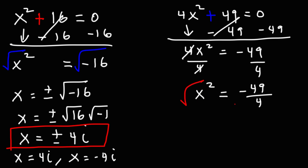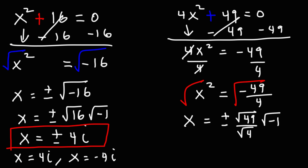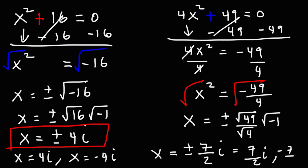Now, let's take the square root of both sides. We're going to have x on the left, and then plus or minus. We can rewrite this square root as the square root of 49 divided by the square root of 4, times the square root of negative 1 — I just broke it up into three parts. The square root of 49 is 7, the square root of 4 is 2, and the square root of negative 1 is i. So our two answers are positive 7 over 2i and negative 7 over 2i, or you could just leave your answer as x equals plus or minus 7 over 2i.